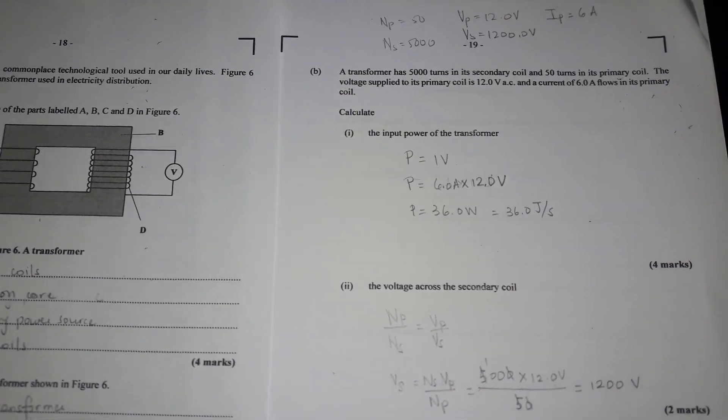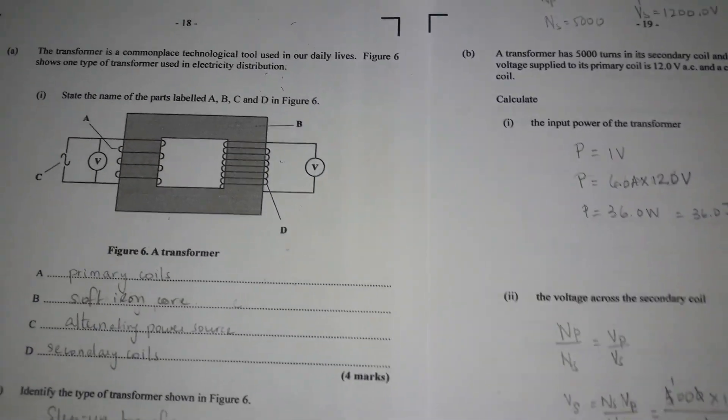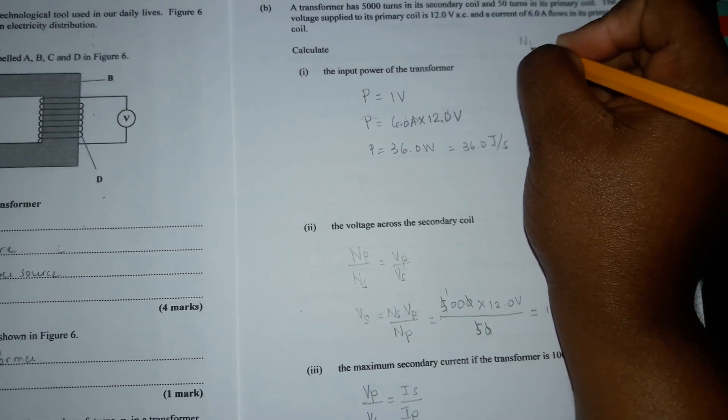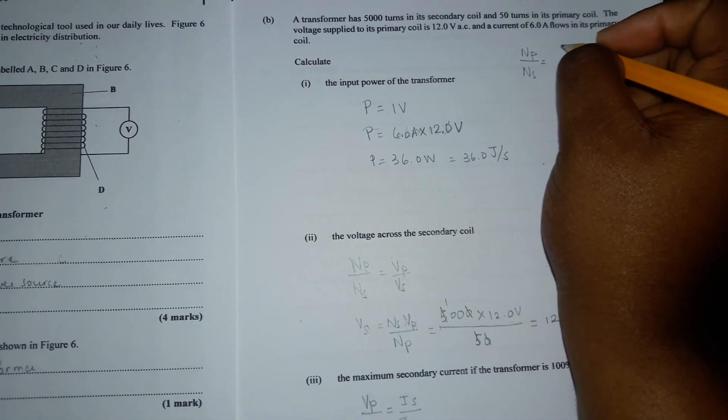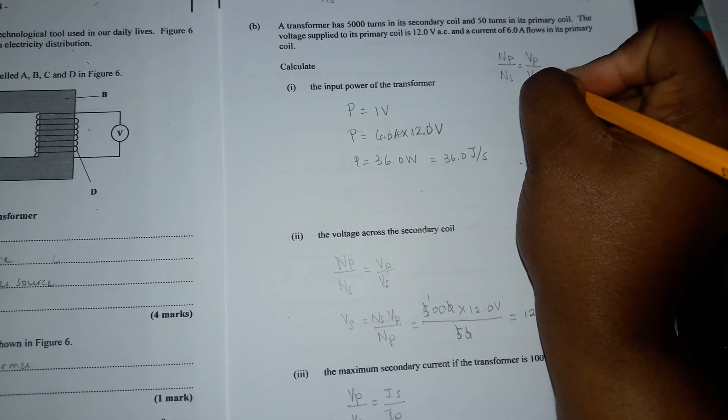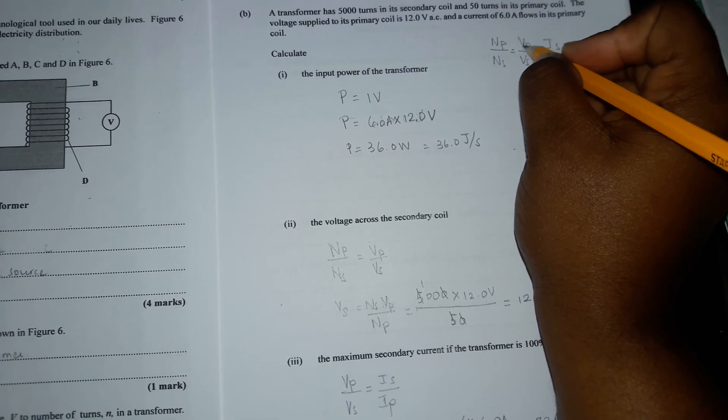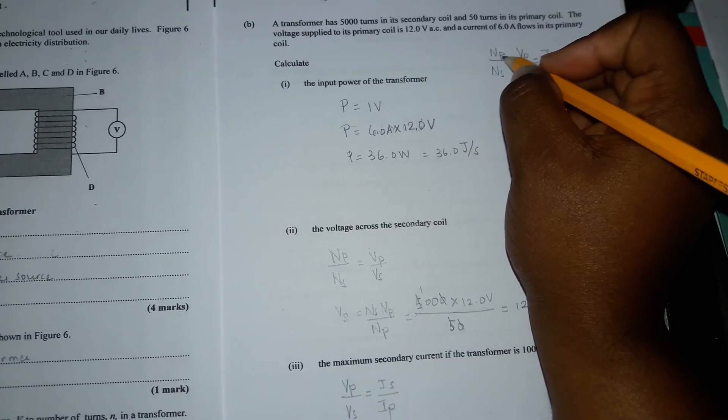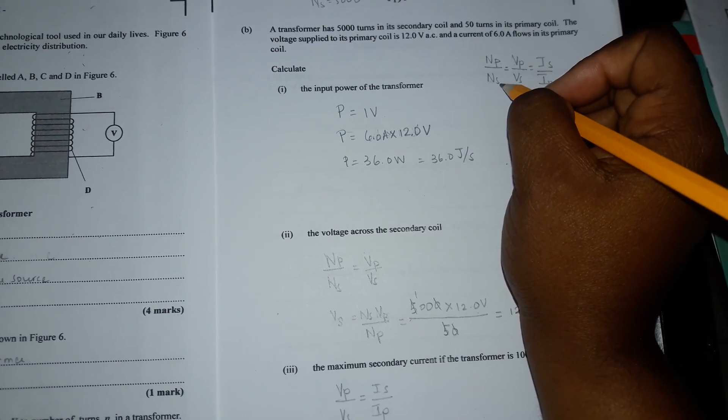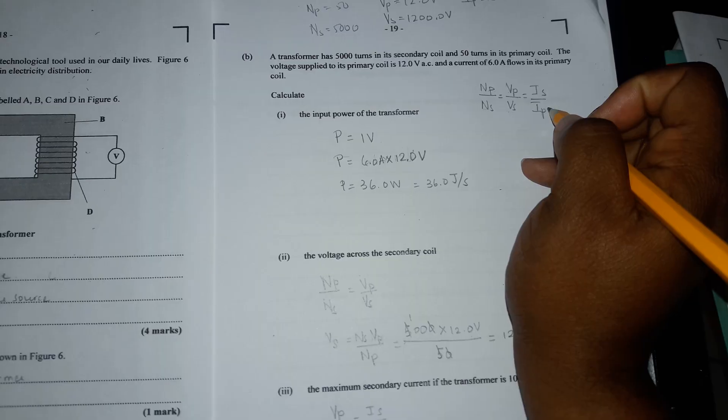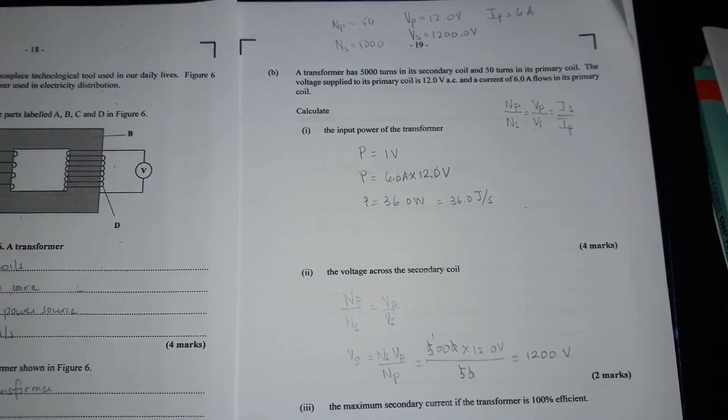Remember the relationship is such that Np over Ns equals Vp over Vs, which equals Is over Ip. For N and V, the primary values are in the numerators and the secondary values are in the denominators. But for current, the secondary value is in the numerator where the primary value is in the denominator. Hope this helps.